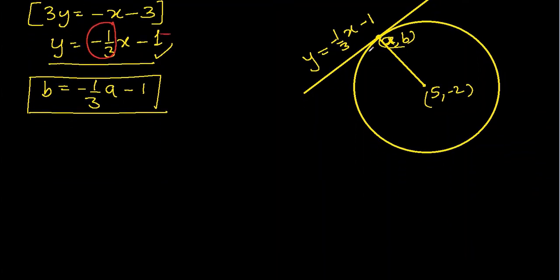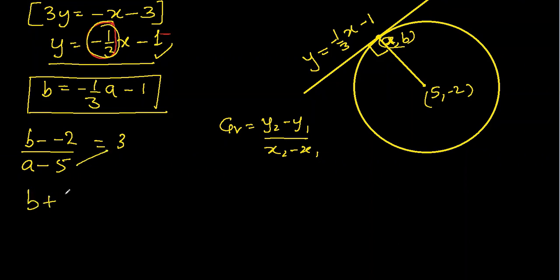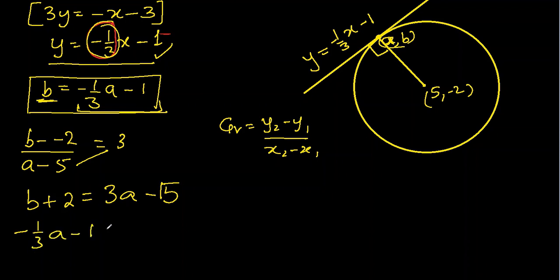We also know that the angle between the tangent and the radius of a circle is always 90 degrees. The gradient of the radius is y2 minus y1 over x2 minus x1. Applying this formula: b minus minus 2 over a minus 5, which equals the negative reciprocal of minus one-third, which is 3. Cross-multiplying: b plus 2 equal to 3a minus 15. Substituting b: minus one-third a minus 1 plus 2 equal to 3a minus 15.